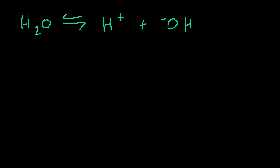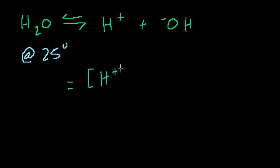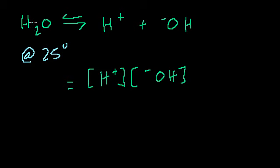In an equilibrium state at 25 degrees Celsius — and remember, equilibrium constants are only dependent on the temperature — the equilibrium constant is the concentration of the products divided by the concentration of the reactants. But the reactant here is just water, the solvent — it's everywhere, so you don't include it. You could just say divided by one, and that this equals the equilibrium constant of water.